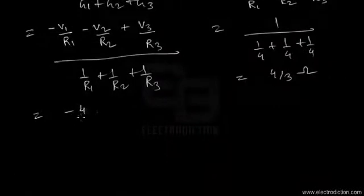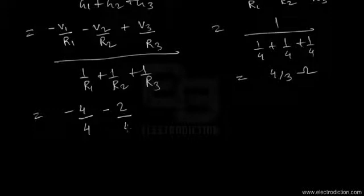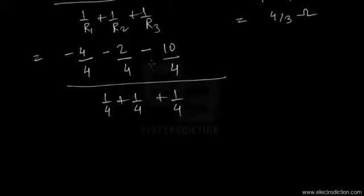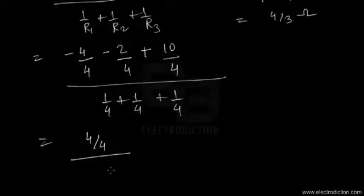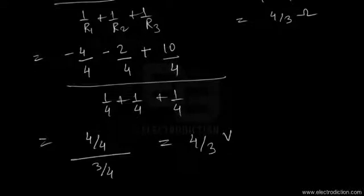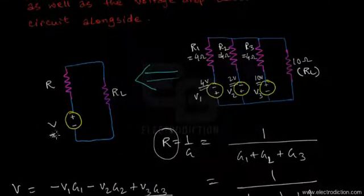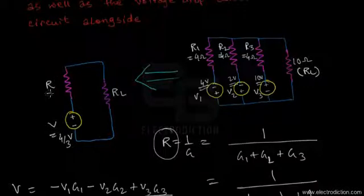Plugging in: V1 = 4 V with R1 = 4 Ω, V2 = 2 V with R2 = 4 Ω, V3 = 10 V with R3 = 4 Ω. Solving, the numerator gives 4/4 and the denominator gives 3/4, so the equivalent voltage V = 4/3 volts. The reduced network therefore has a source voltage of 4/3 V and an internal resistance of 4/3 Ω.